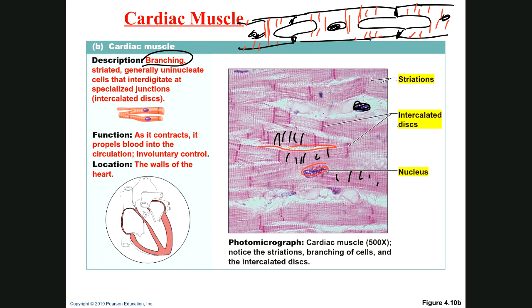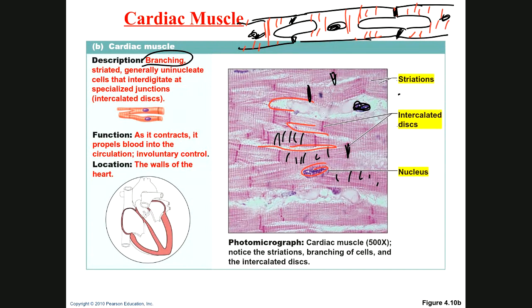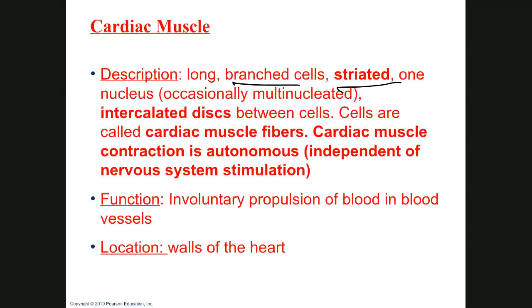Another characteristic unique to cardiac muscle cells are the intercalated discs — you can see them here connecting cells. When a structure is unique to a cell, it's critical to that cell's function. These intercalated discs are critical in the function of cardiac muscle cells. So cardiac muscle is: branched cells, striated, one nucleus — occasionally multinucleated but typically one — and we definitely see intercalated discs.